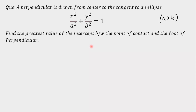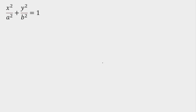Today I'm going to discuss a question from application of derivatives. The final result from this question is really important and useful for many competitive exams. The question is: a perpendicular is drawn from the center to the tangent of an ellipse x²/a² + y²/b² = 1, where a > b, so it is flattened on the x-axis. Find the greatest value of the intercept between the point of contact and the foot of the perpendicular. From the diagram it will be more clear.